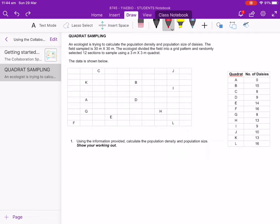Now it's really important that when we do quadrant sampling that we try and hit a minimum of 10% of the total area. So if we've got quadrants that are 3 metres by 3 metres, that gives us a 9 metre squared quadrat. We've got a total area which is 900 square metres, so 30 times 30 gives us 900.